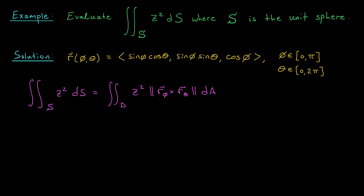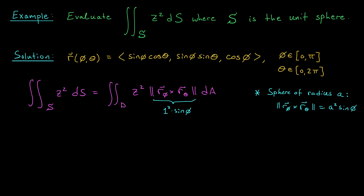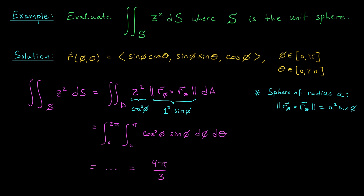In our last lesson, we went through the whole process of finding the norm of r_φ cross r_θ for a general sphere of radius a, and found that norm equals a² sin φ. So in our case, the norm is just sin φ. By replacing z² with cos² φ and using the bounds for φ and θ, we get the integral from 0 to 2π, integral from 0 to π, of cos² φ sin φ dφ dθ. This is a very easy double integral — we can pull the θ integral out and use a substitution for the φ integral. The final answer is 4π/3. Let's check out some more examples in the next lesson.